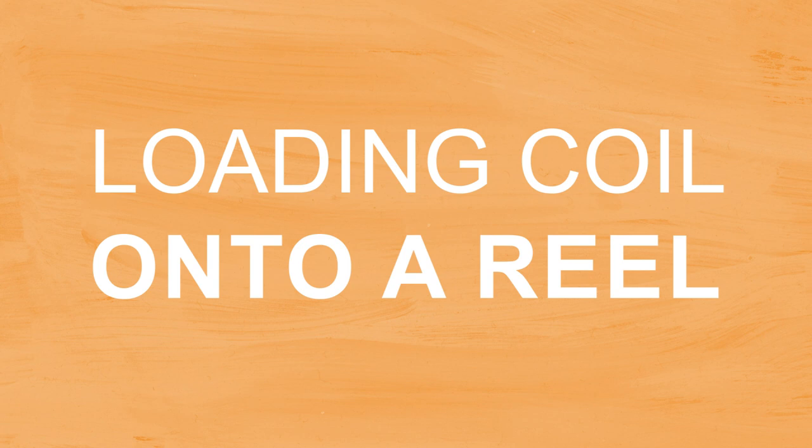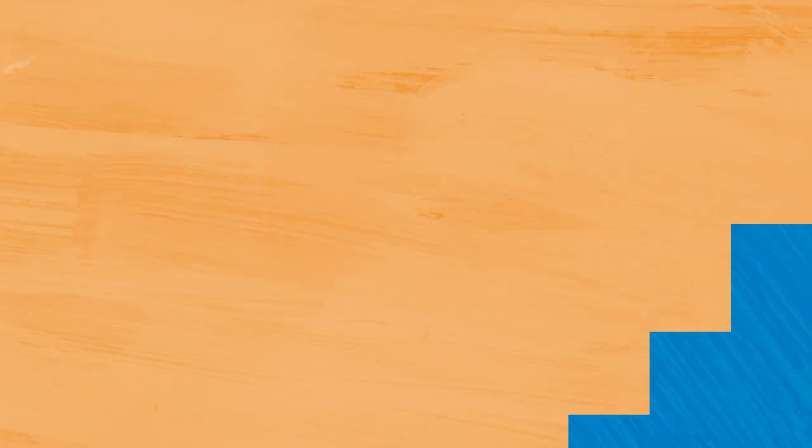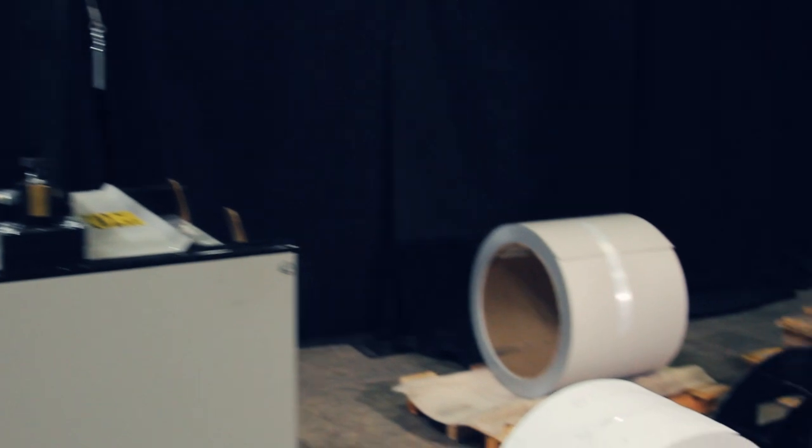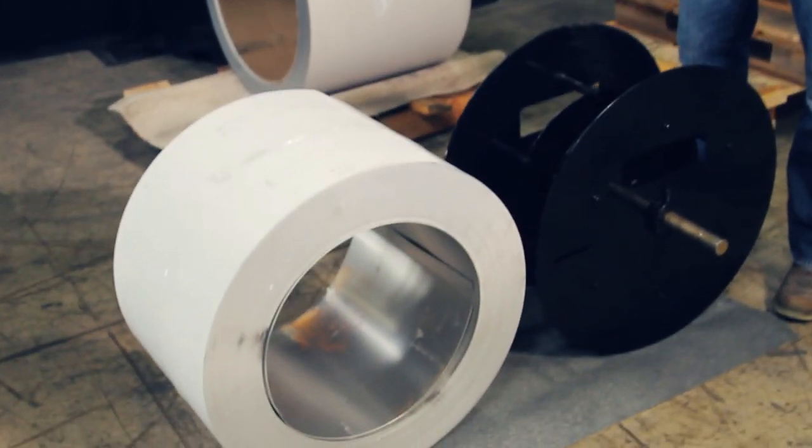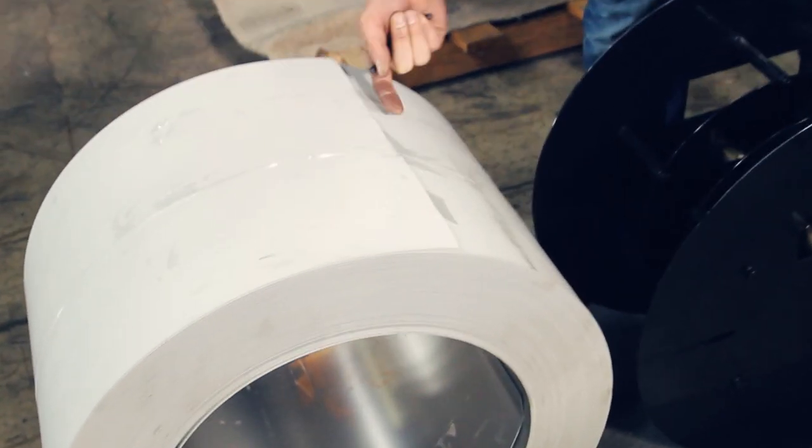First thing you want to do is grab your coil and set it next to your machine with the edge of the coil up on top and position it so it's pointing towards the entry end of the machine.